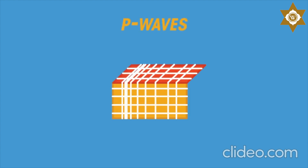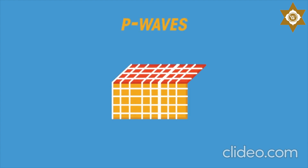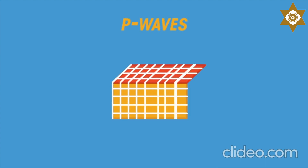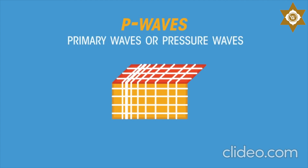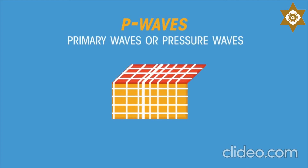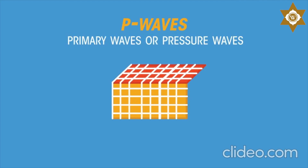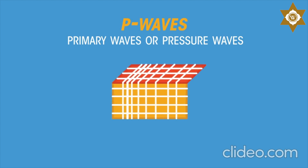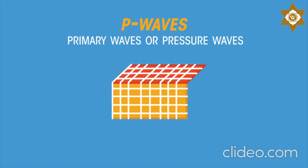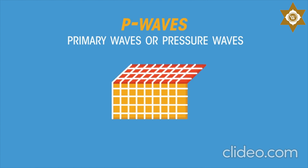P waves. These waves travel the fastest and are called primary waves or pressure waves, as they arrive at a distant location first. These waves compress and stretch the rocks as they spread out. P waves pass easily through both solids like rock and liquids like magma.